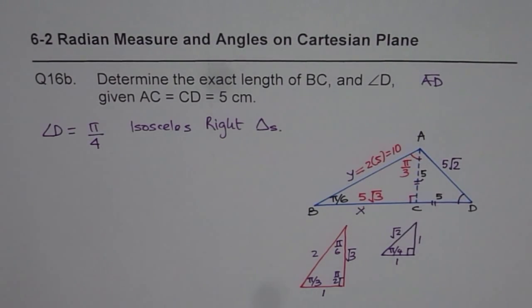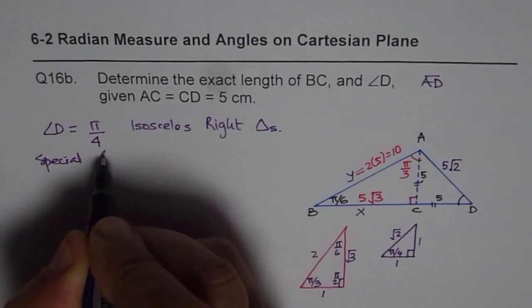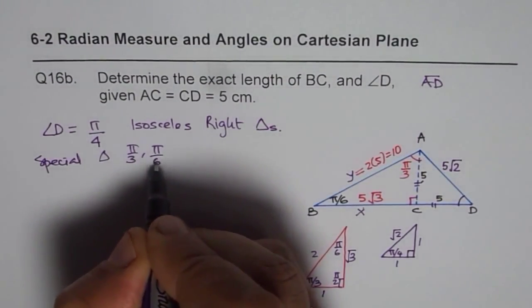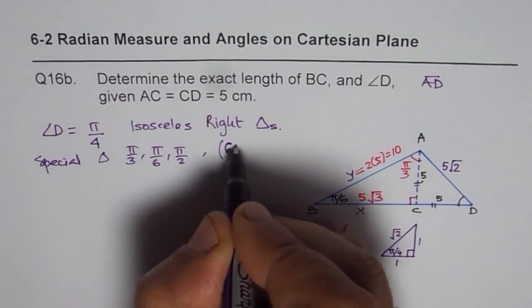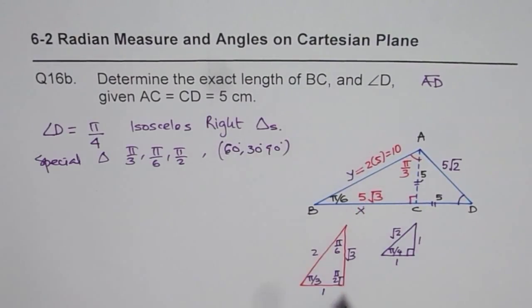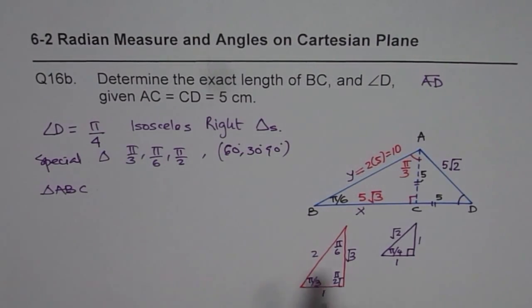So that's the beauty of using special triangles. So now using special triangle, which is pi by 3, pi by 6, pi by 2, right? That is 60, you could write 60, 30, 90 degrees triangle. We can solve triangle ABC, right? So easily, ABC.